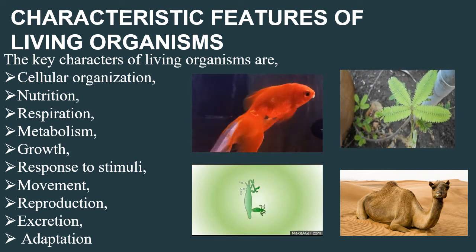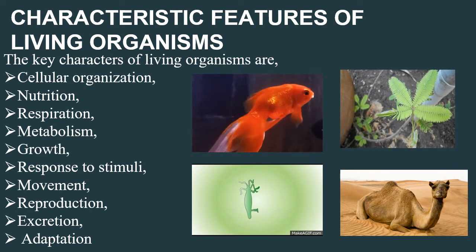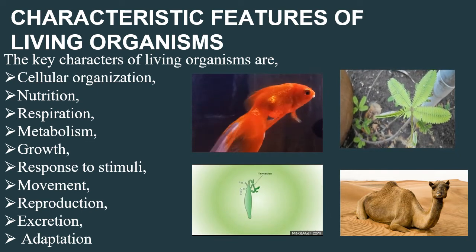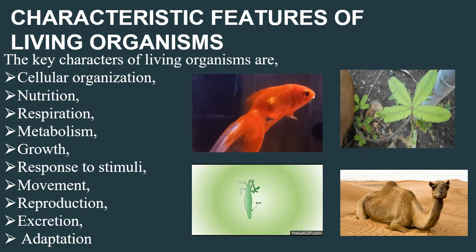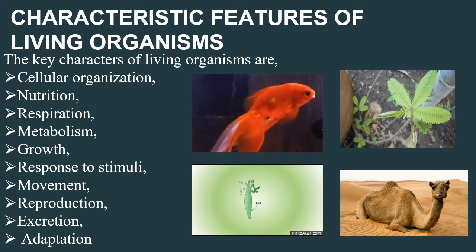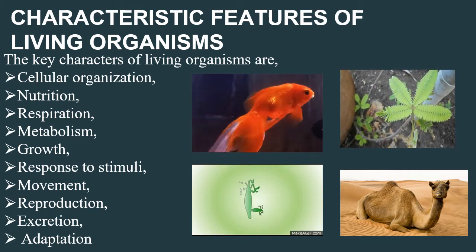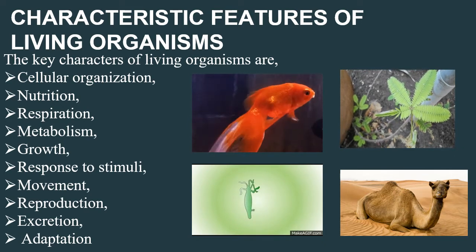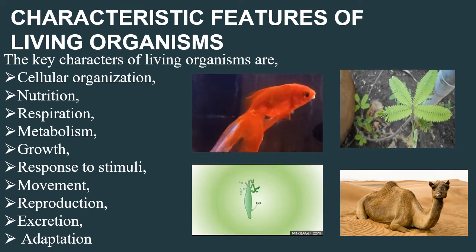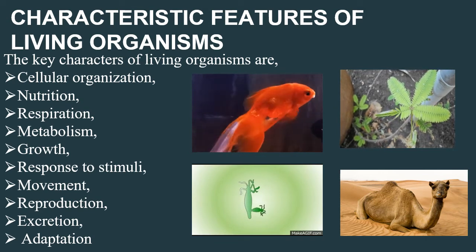Metabolism is the total chemical reactions that take place in our body. There are two types of metabolism: anabolism and catabolism. An example of anabolism is amino acids combining together to form proteins. Catabolism is otherwise known as a breaking-down reaction — food gets oxidized and releases energy.